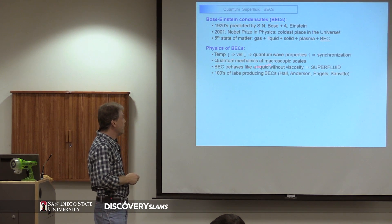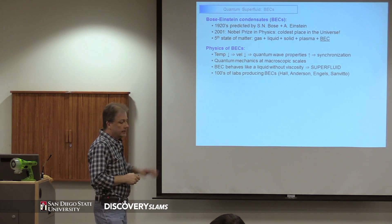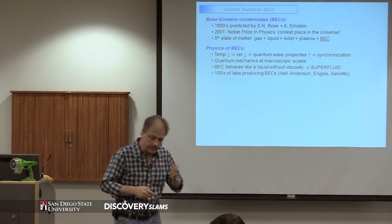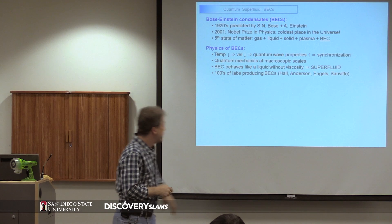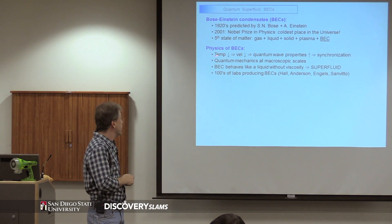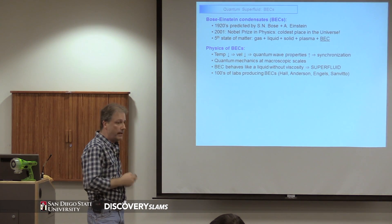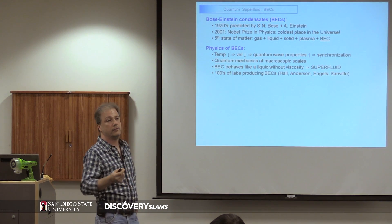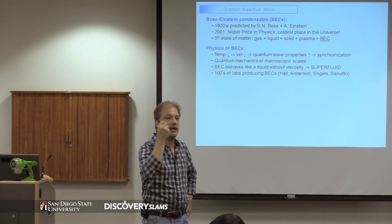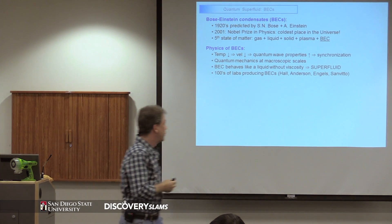How are they formed? If you know a little bit of quantum mechanics, you can understand how this goes. In essence, if the temperature goes down, all your objects are going to have a lower velocity.